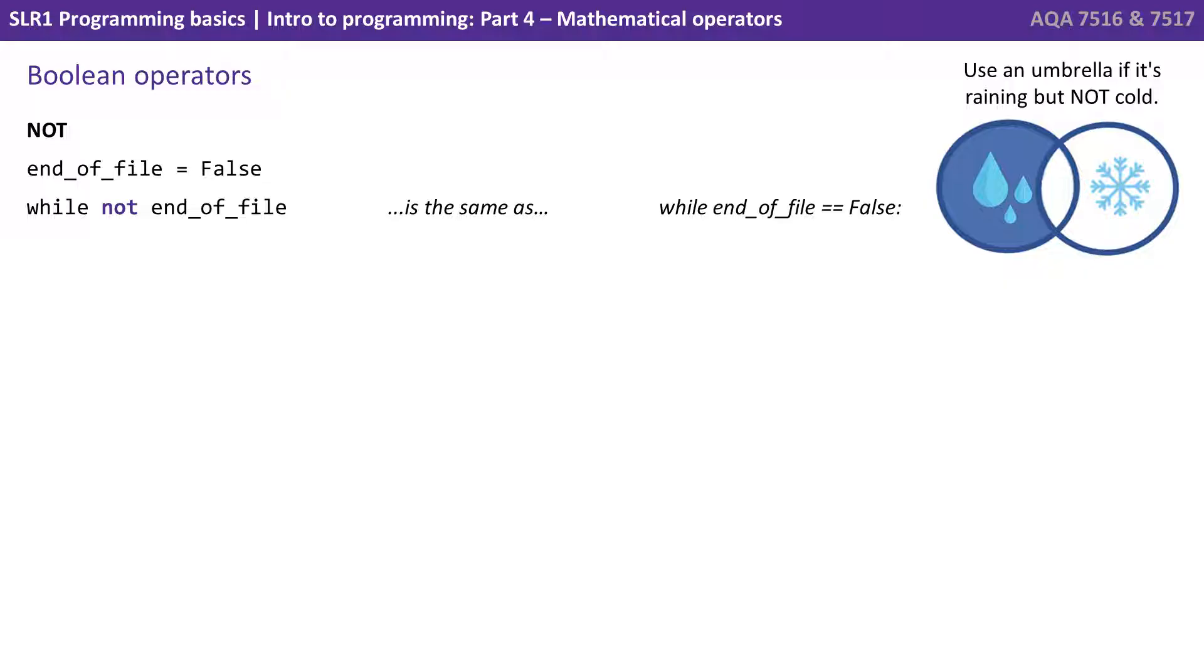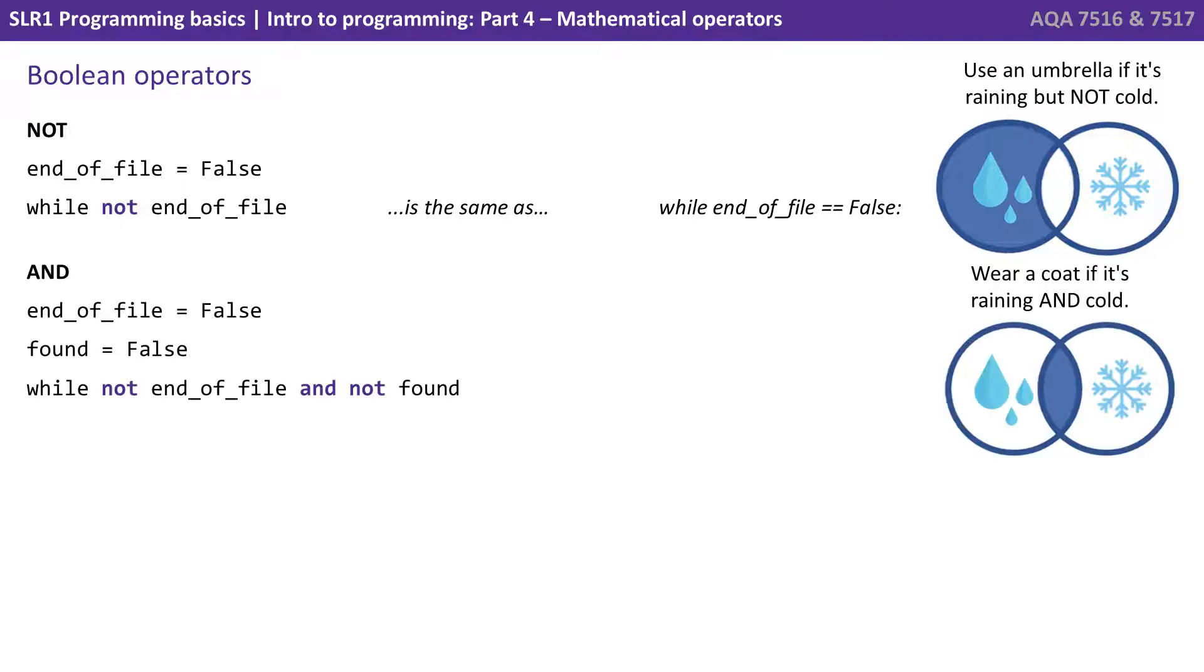Finally, let's look at the basic boolean operators. First of all, we have not. So think of this using the example, we use an umbrella if it's raining, but not cold. We can say end of file equals false, while not end of file. We have the and boolean operator, so think of this like wear a coat if it's raining and it's cold, while not end of file and not found.